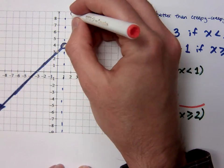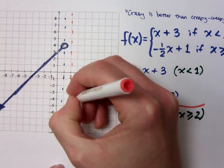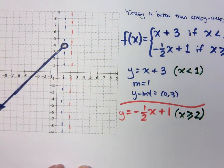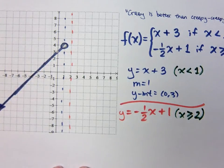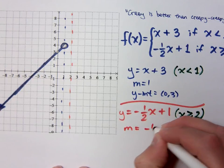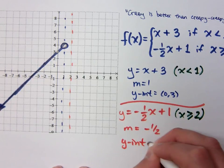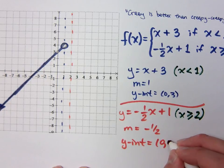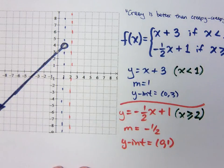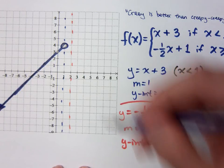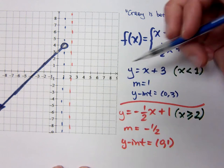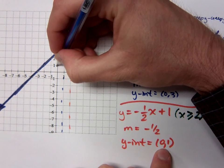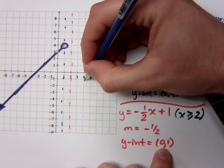My line of demarcation is going to be right here. If I were to graph this, it is linear with a slope of negative one-half, and the y-intercept is 0, 1. So my y-intercept is right here, then down 1, over 2, and so on.